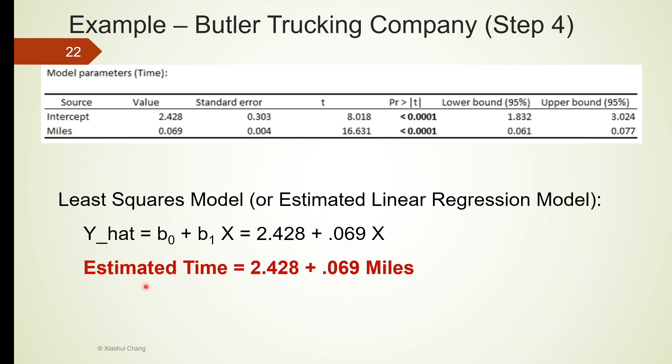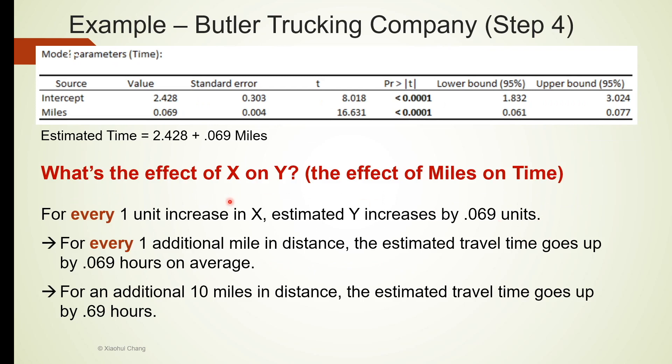Once we have the estimated linear regression model or the least squares model, we can answer a few important questions based on our model. What's the effect of x on y? Or the effect of miles on time? This is probably one of the most important questions in linear regression. Well, this effect is measured by the slope coefficient, that is 0.069.